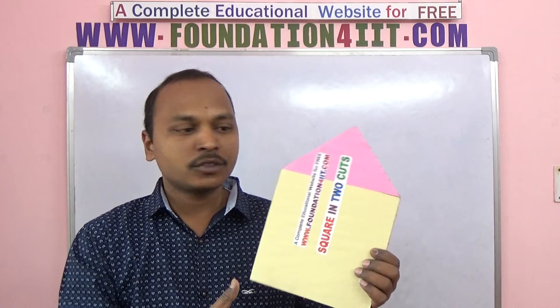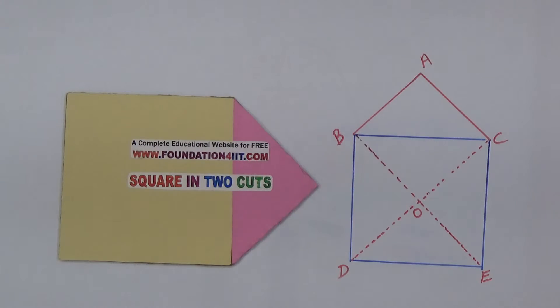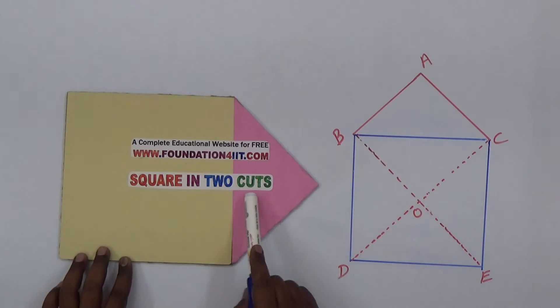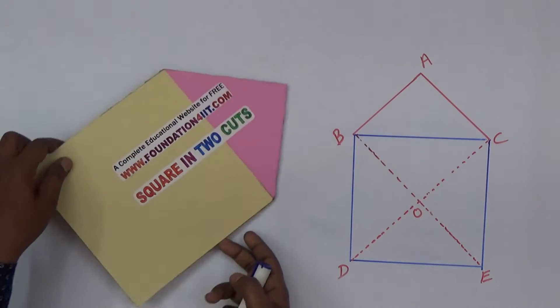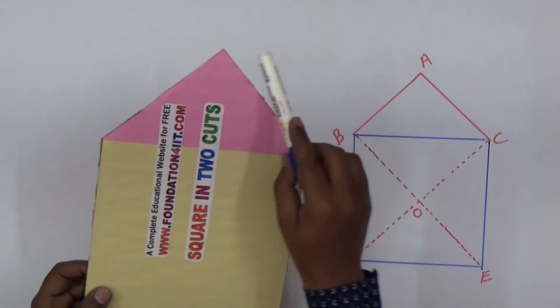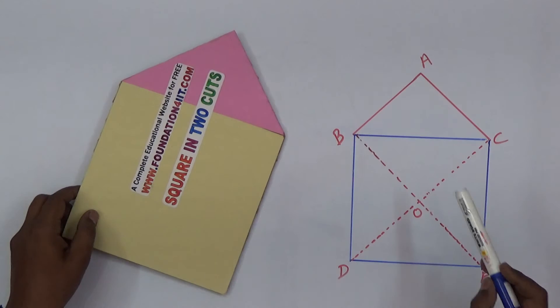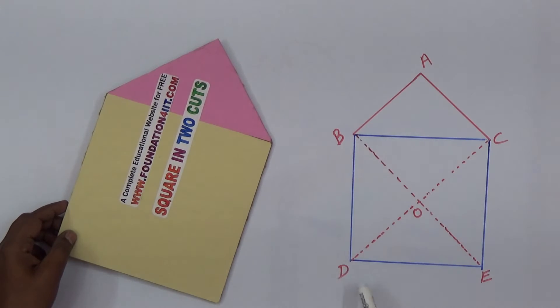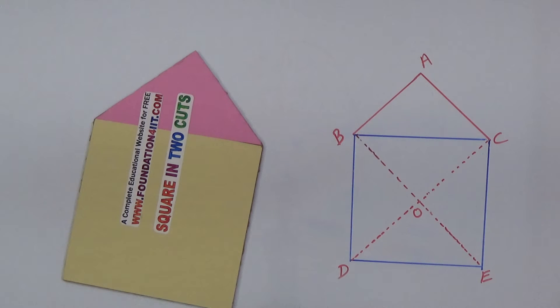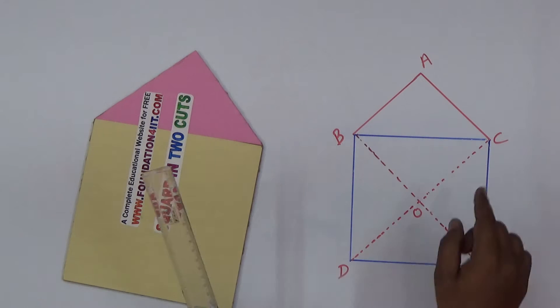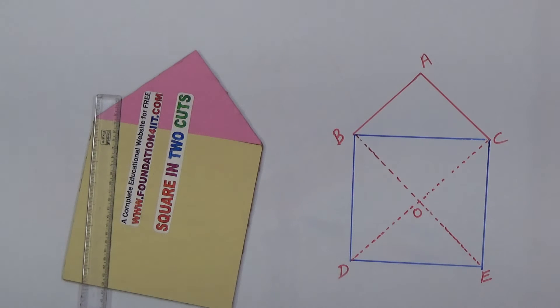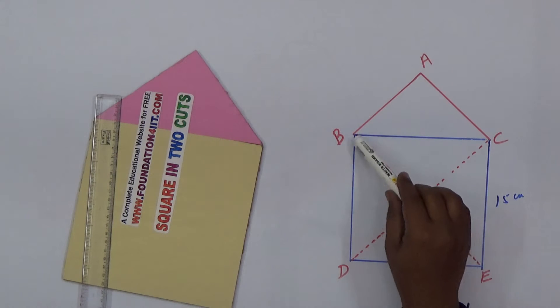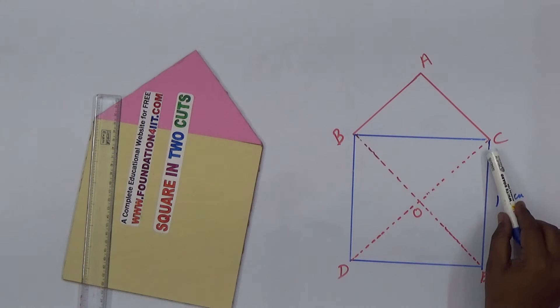This is the square and above is a triangle. ABC is a triangle and BCDE is a square. Using the scale, you can observe this is exactly 15 centimeters - every side is 15 centimeters.